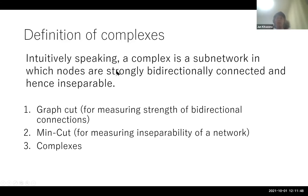Intuitively speaking, a complex is a subnetwork in which nodes are strongly bidirectionally connected, and hence inseparable. A complex is a subnetwork whose parts are strongly connected to each other in a bidirectional manner. In other words, a complex cannot be cut into two parts without losing many strong edges, no matter how it is cut.